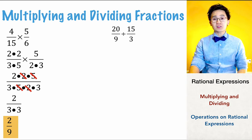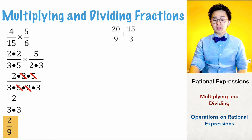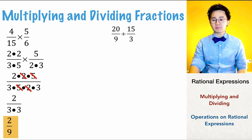We're going to use the same technique for dividing fractions. For 20 over 9 divided by 15 over 3, the rule is to copy the first fraction, reciprocate the second fraction, and then proceed to multiplication.